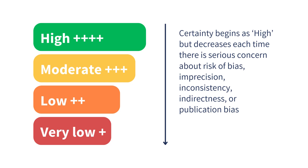Putting all of these considerations together, the level of certainty of evidence about a result is rated as high, moderate, low, or very low. The certainty that a result is true begins as high. However, the certainty decreases one or more levels each time there is a serious concern about risk of bias, imprecision, inconsistency, indirectness, or publication bias.